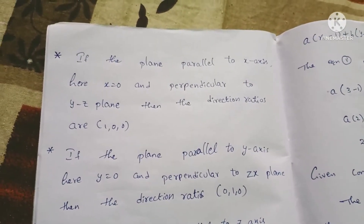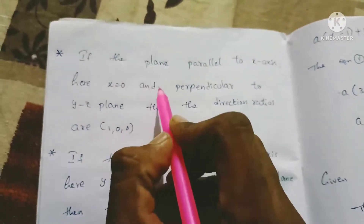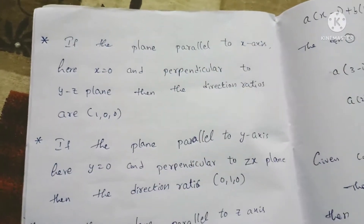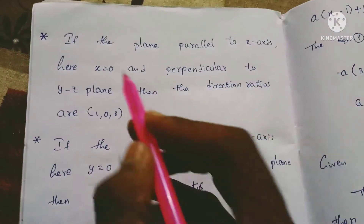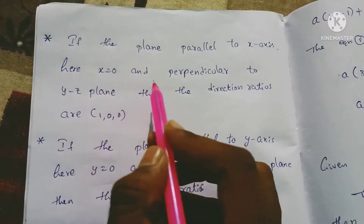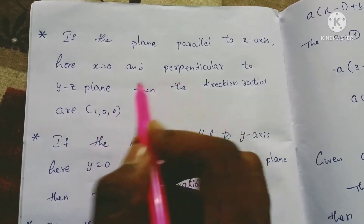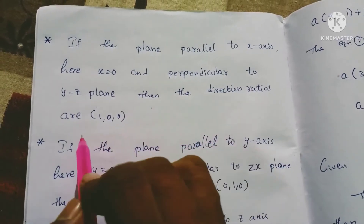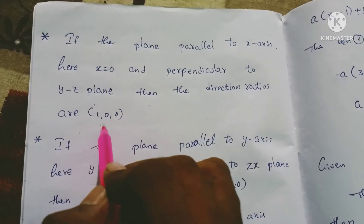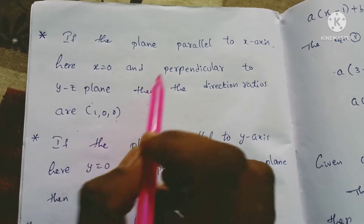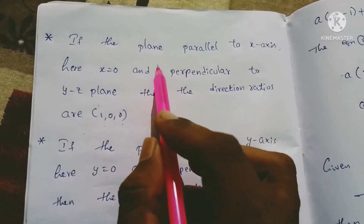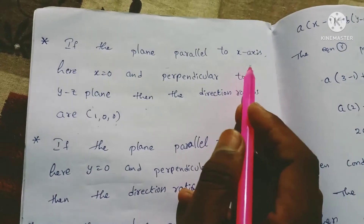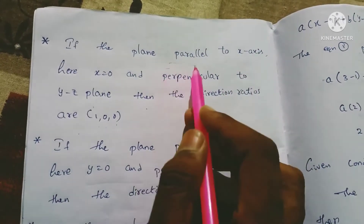If the plane is parallel to the x-axis, then x is equal to 0, and it is perpendicular to the y-z plane. In that case, the direction ratios are 1, 0, 0. If the plane is parallel to the x-axis, then x is equal to 0.